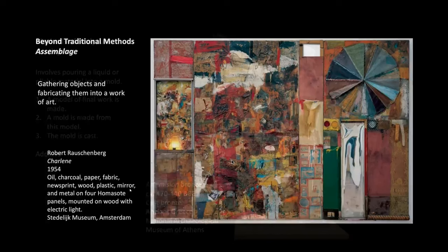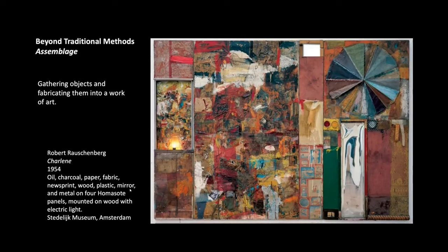The first section covered carving, modeling, and casting — all very traditional types of sculpture, which is why many examples I gave you were from the ancient world. Now we're going to think about non-traditional techniques that go beyond the traditional methods. A lot of these examples will be modern to contemporary, because during that era artists were interested in breaking down these boundaries and really playing with what sculpture could be.